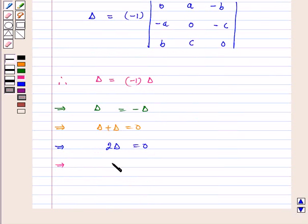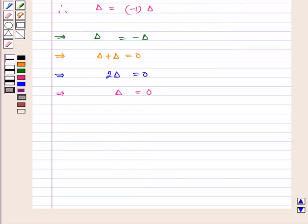This implies delta is equal to 0, which implies 0, A, minus B, minus A, 0, minus C, B, minus C, 0 is equal to 0. So, hence proved.